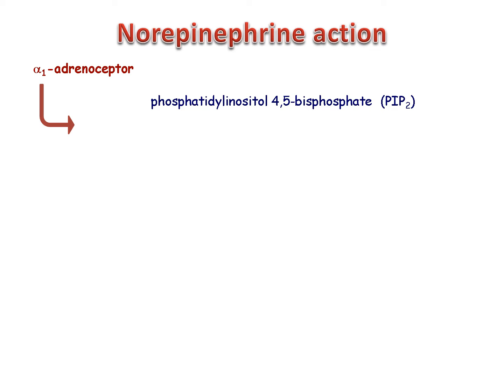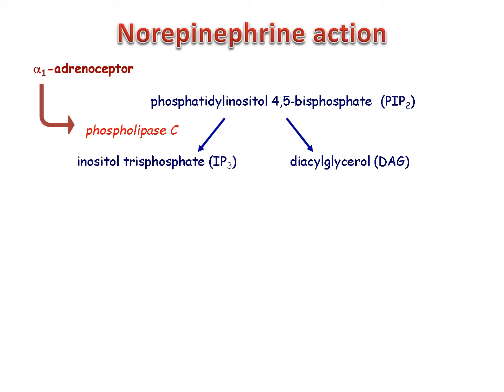This slide summarises the events that take place in the vascular smooth muscle cell when alpha-1 adrenoceptors are activated by norepinephrine, also known as noradrenaline. Alpha-1 receptors are G-protein coupled receptors that couple to the enzyme phospholipase C. When activated, phospholipase C cleaves phosphatidylinositol bisphosphate in the plasma membrane into IP3 and diacylglycerol. IP3 diffuses to the sarcoplasmic reticulum where it activates IP3 receptors to release calcium into the cytoplasm, and the rise in cytoplasmic calcium concentration leads to contraction.